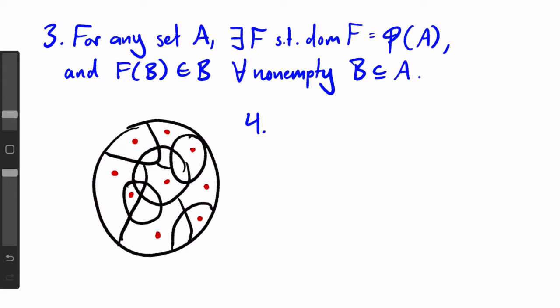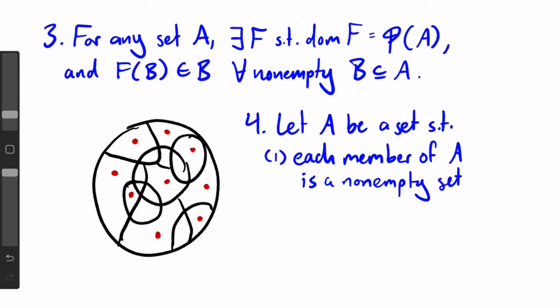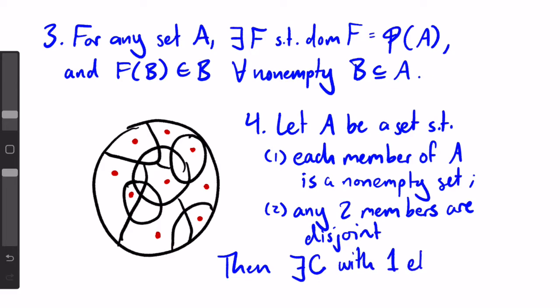And finally, form four states, let a be a set such that, first, each member of a is a non-empty set, and second, any two distinct members of a are disjoint. Then, there exists a set c containing exactly one element from each member of a.